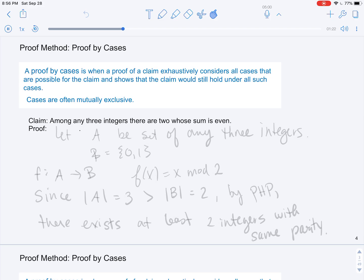First, to apply the pigeonhole principle, we have to consider what our pigeons will be. So in this case, our pigeons will be our set A, so let our set A be the set of any three integers. Our holes, or our set B, will be the set {0, 1}. Now we need a mapping from A to B, and this mapping F will be the value of the integer mod 2.